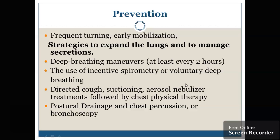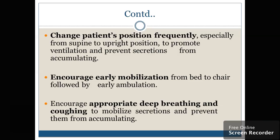What will be the prevention? Frequent turning and early mobilization — the strategy is to expand the lung and to manage the secretion. Deep breathing exercises or deep breathing maneuvers at least every two hours should be provided; we have to ask the patient to do deep breathing exercises. Use incentive spirometry. Directed coughing, suctioning, or aerosol nebulizer is to be provided. Chest physiotherapy is considered. Postural drainage, chest percussion, or bronchoscopy. Change patient position frequently, especially from the supine to upright position, to promote ventilation and prevent secretion from accumulating.